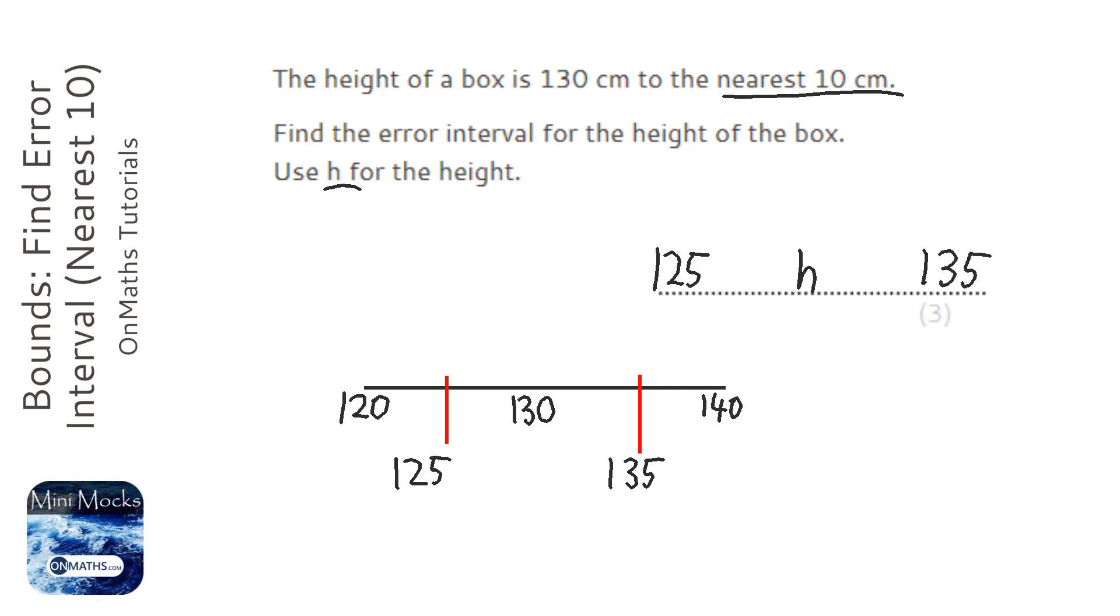Now h could have been 125, so we have a little equals underneath the inequality. h was less than 135, but it couldn't be 135 otherwise it would round up to 140, so we don't put the equal sign there. Now this middle bit here, that will always be the same when you're answering this question.